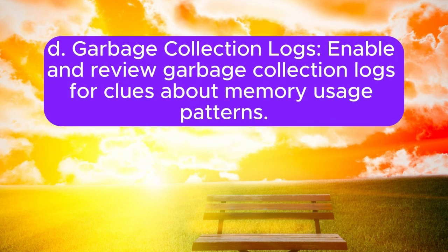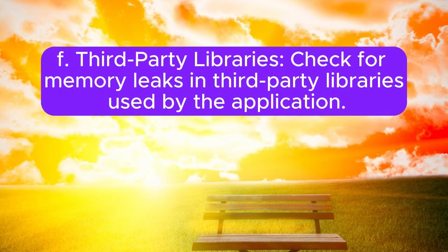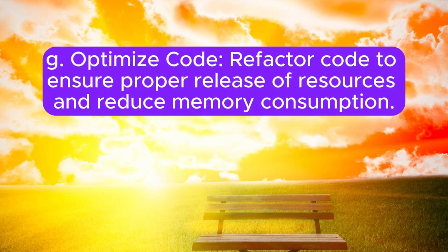D. Garbage collection logs — enable and review garbage collection logs for clues about memory usage patterns. E. Profiling tools — use memory profiling tools, for example YourKit or VisualVM, to track memory allocation. F. Third-party libraries — check for memory leaks in third-party libraries used by the application. G. Optimize code — refactor code to ensure proper release of resources and reduce memory consumption.